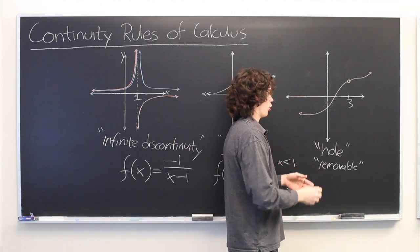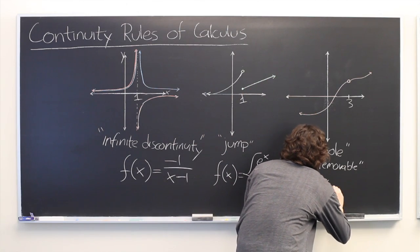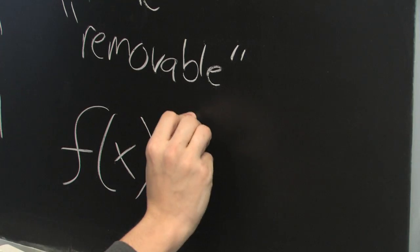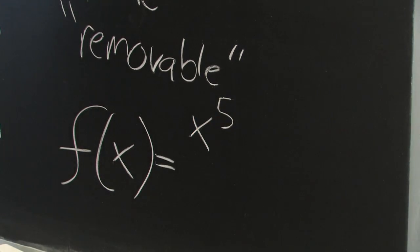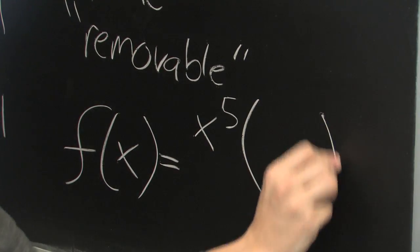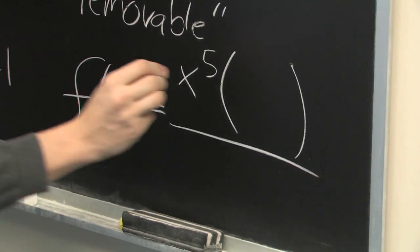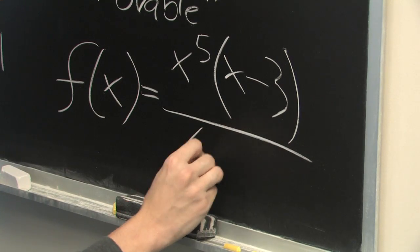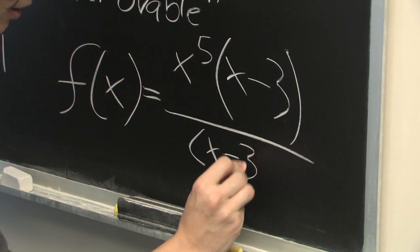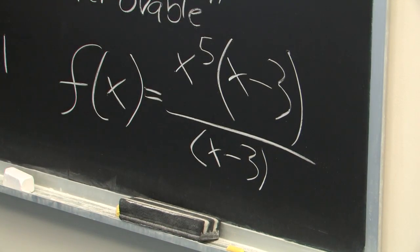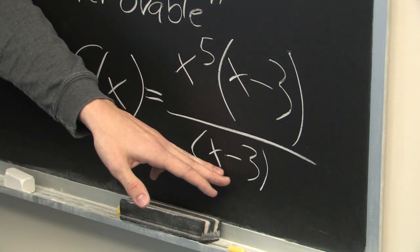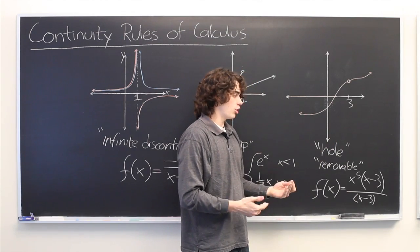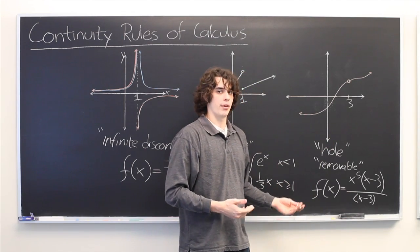Other times this can occur when we have f of x equals something in the numerator. Let's just say x to the fifth. But then we have a factor in the numerator and the denominator. So here we have x minus 3 in the numerator and x minus 3 in the denominator. When you plug in x equals 3, you get an indeterminate form of 0 over 0, and the function is undefined.